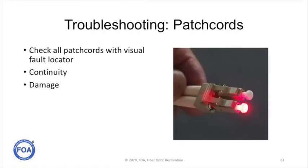The easiest and quickest way to test patch cords is with a visual fault locator — see if you're getting light through them. There are two things you have to worry about: one is continuity, are we getting light through this patch cord; and two, is it connected up to the right port? There have been many instances of systems being down where people haven't been able to troubleshoot because somebody plugged the wrong connector into the wrong port.